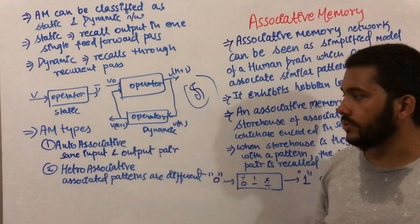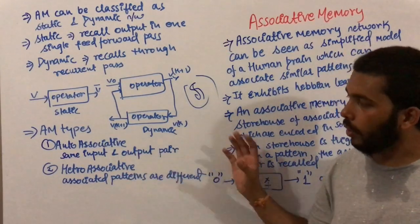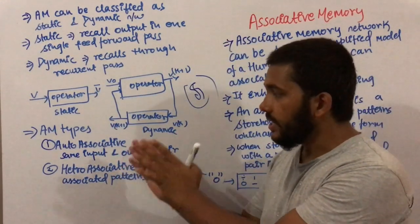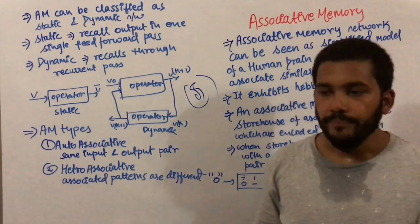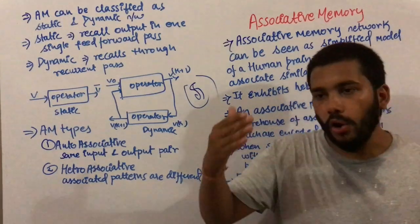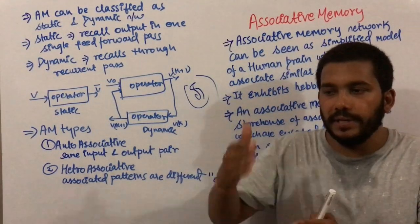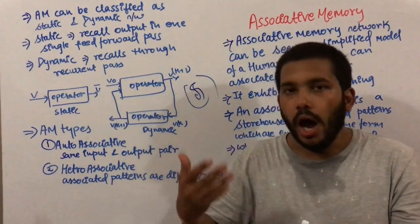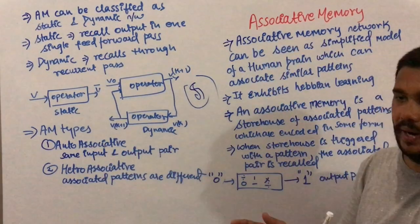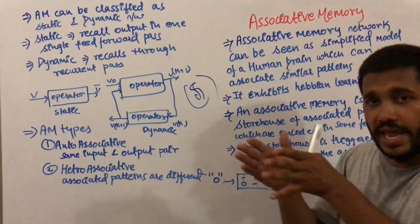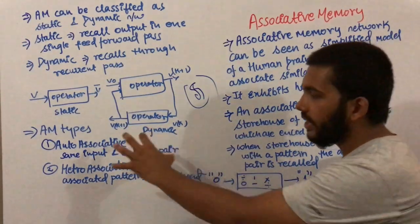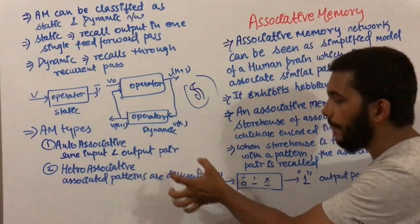Associative memory is mainly of two types: auto associative memory and hetero associative memory. In auto associative memory, we get the same input and output pair. Suppose you recall a teacher from your school — you will recall similar things related to them, like their dressing sense, whether they wore specs, or whether their hair was short or long. You are recalling an input pattern and getting the same output patterns related to it.